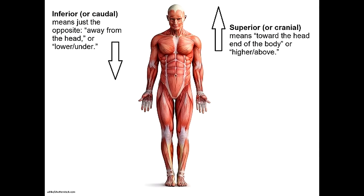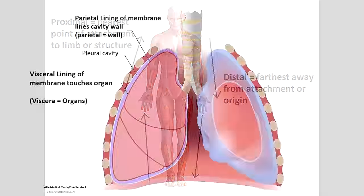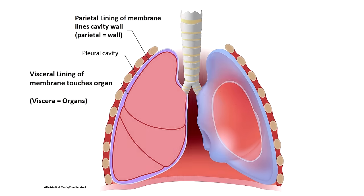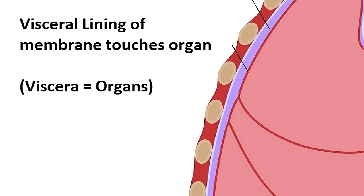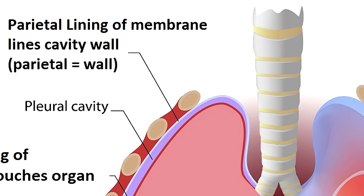Anatomists use additional directional terms to describe portions of the membrane lining. The part of the serous membrane that actually touches the organ is called the visceral layer — easy to remember because your organs are called your viscera. The outer lining that lines the wall of the cavity is called the parietal layer, and the word parietal comes from a Latin word meaning wall. So visceral touches the viscera, and parietal lines the wall.